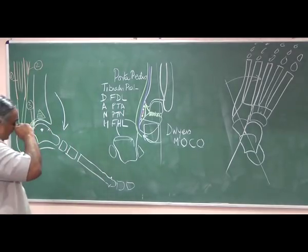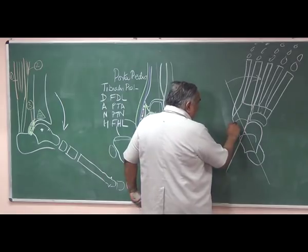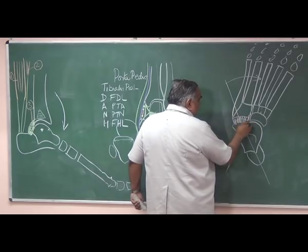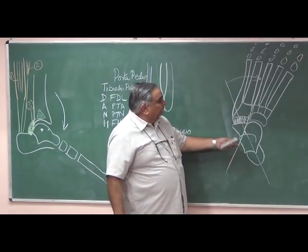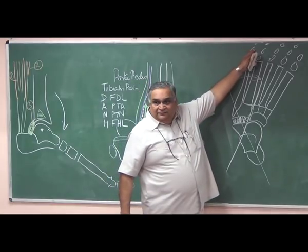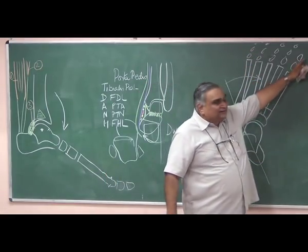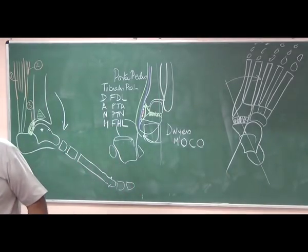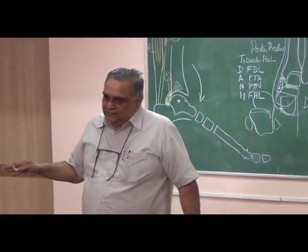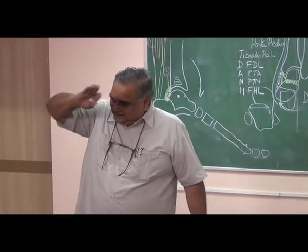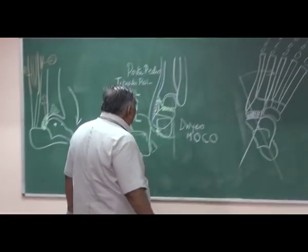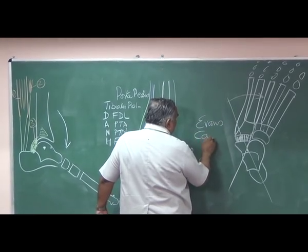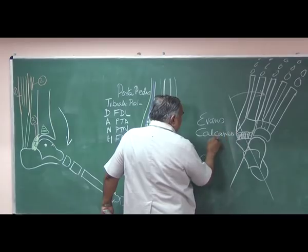Because of the forefoot adduction, one operation you can do is fuse the calcaneocuboid joint. If you fuse this joint, growth of the lateral border will stop, growth of the medial border will continue, and if you do this operation at about 8 to 10 years, by the time the patient reaches 12 years, the deformity will be corrected. This operation is called the Dillwyn Evans calcaneal cuboid fusion.